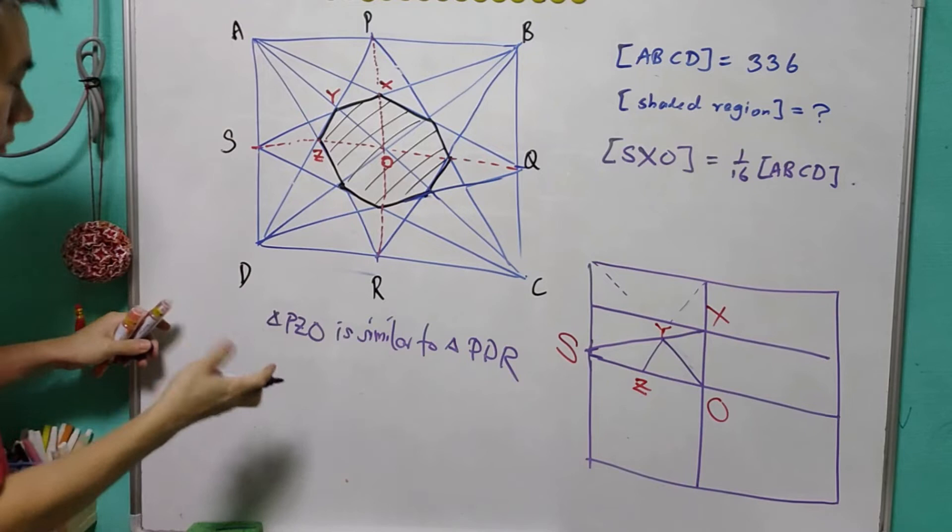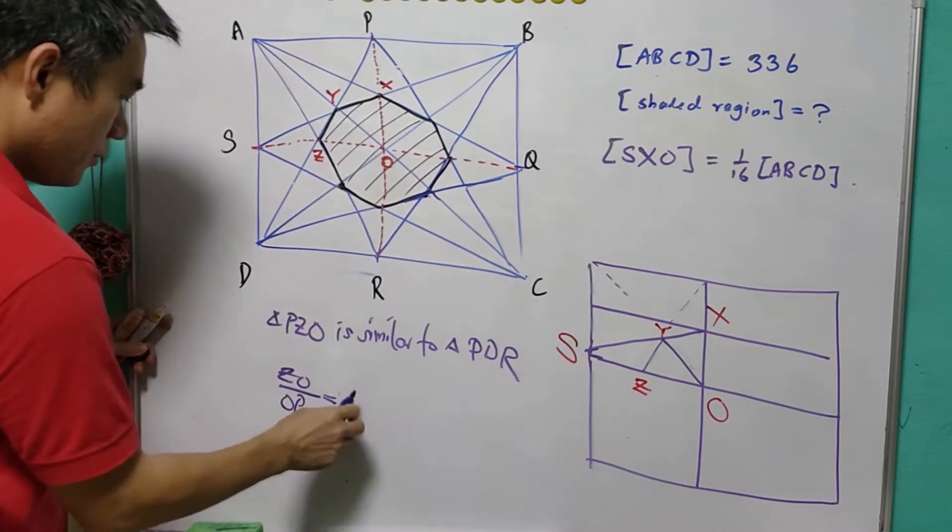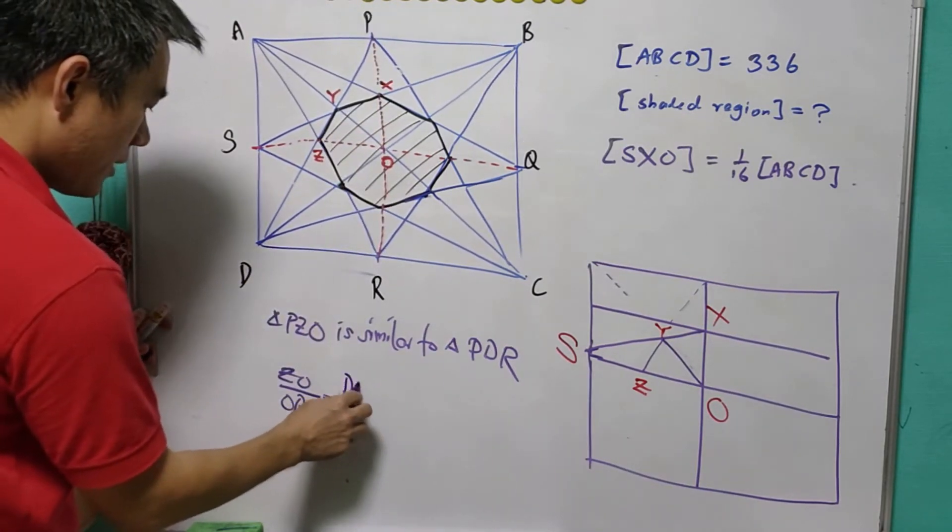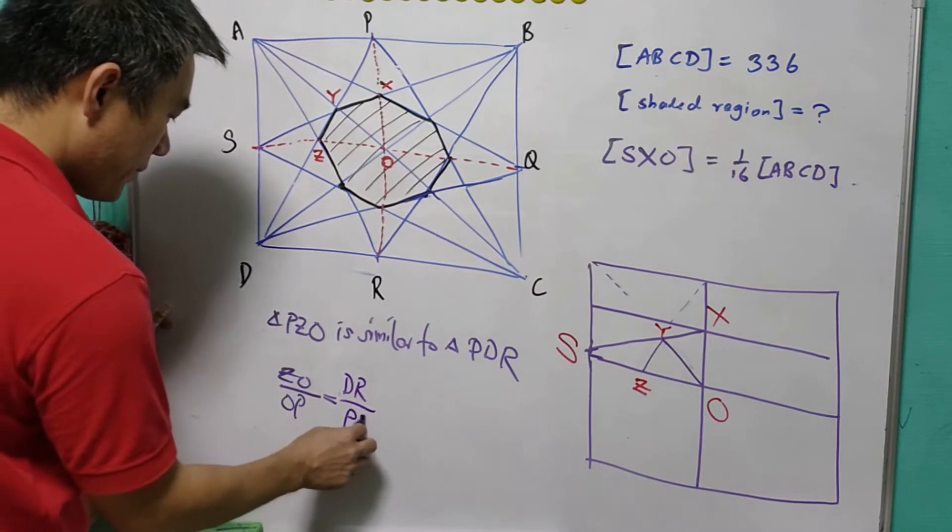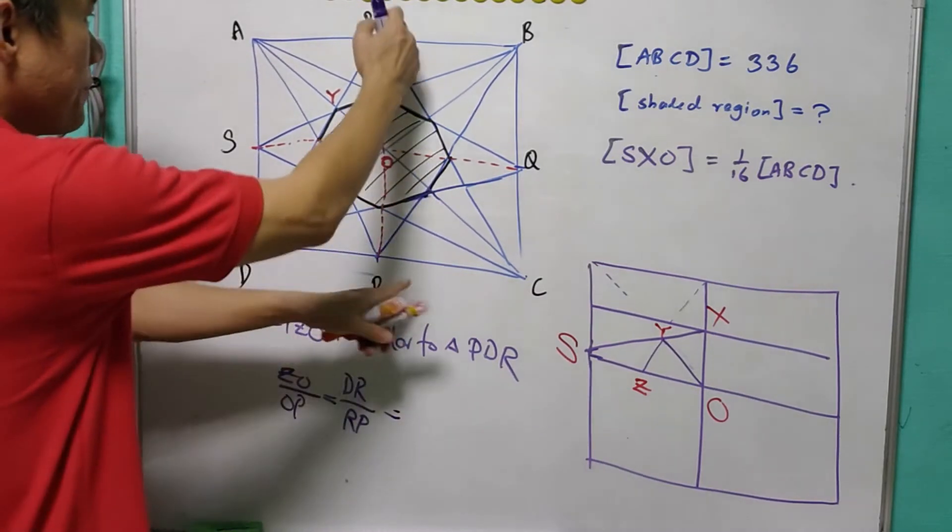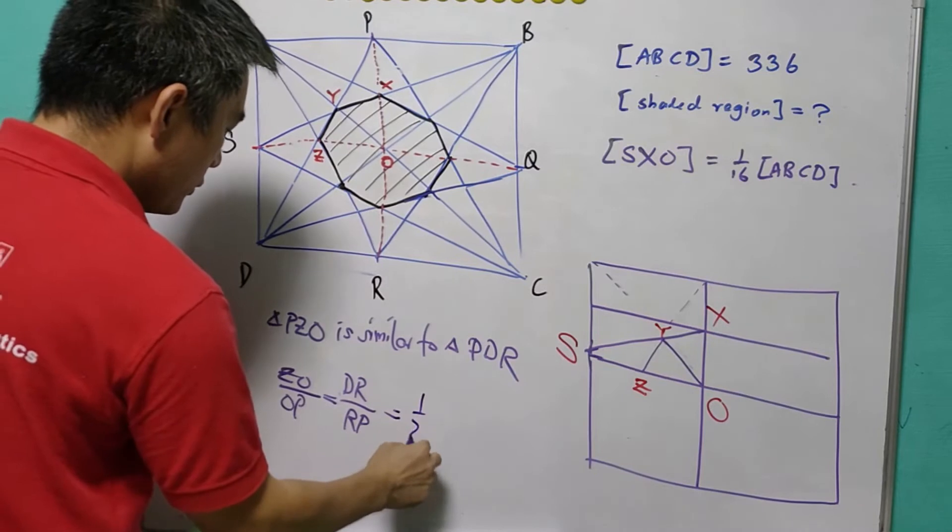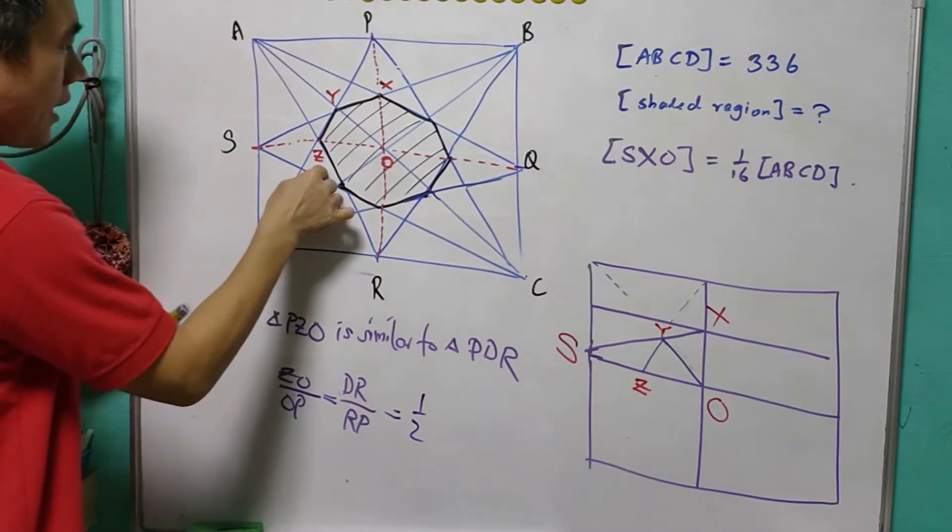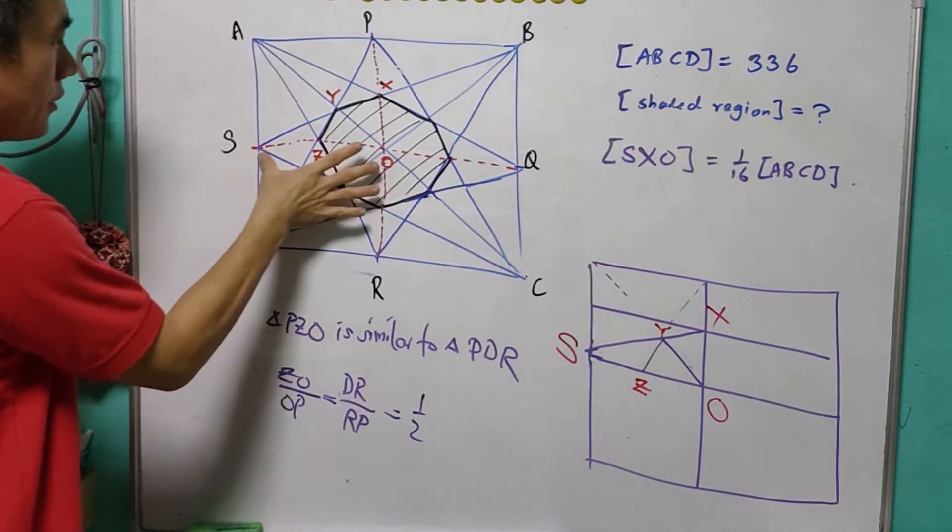And therefore, ZO over OP is equal to DR over RP. DR over RP will be equal to 1 over 2. This will mean that Z is a midpoint of X and O.